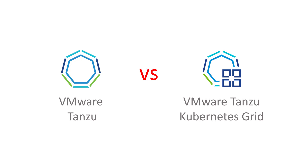Hi everyone, I've got a short video here discussing VMware Tanzu versus VMware Tanzu Kubernetes Grid. When I speak to customers, I see a lot of confusion around the differences between Tanzu and TKG — they tend to use the words very interchangeably. For example, I hear customers say 'I'd like to install Tanzu' when in fact they meant 'I'd like to install TKG.'